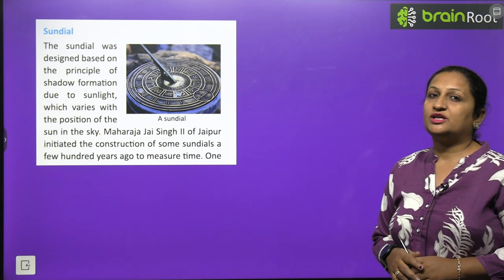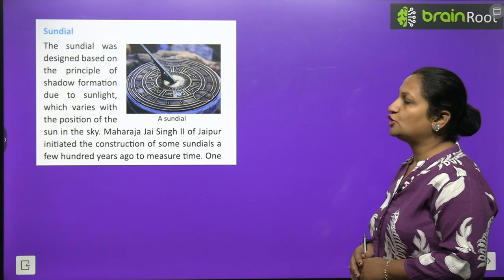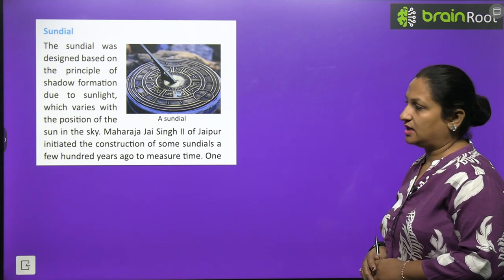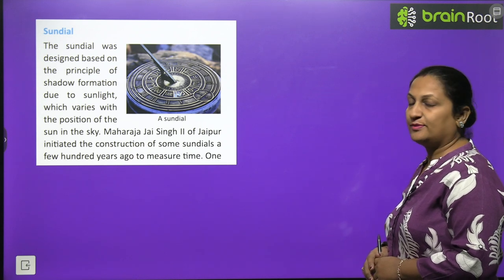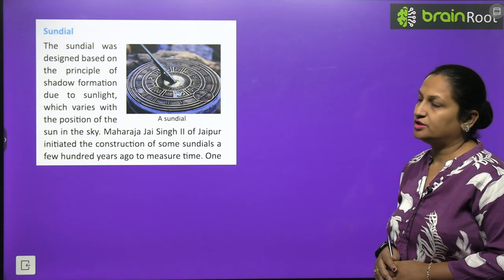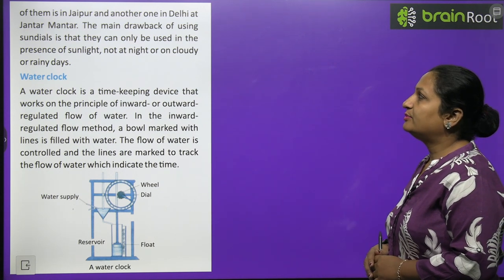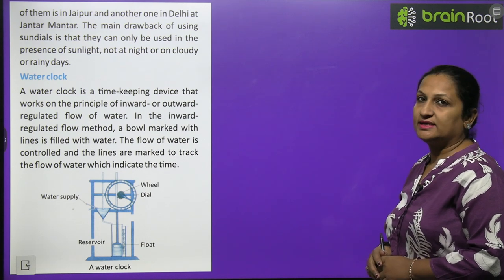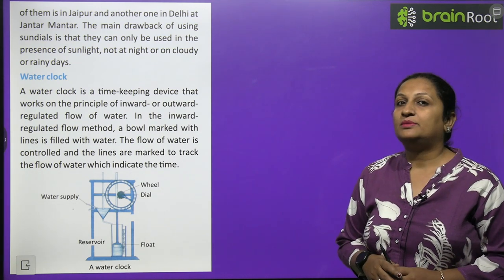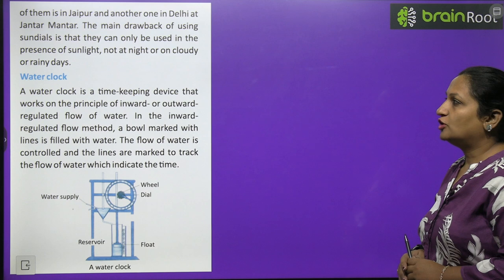Then there is the sundial. The sundial measures time on the basis of the shadow of the Sun. It was designed based on the principle of shadow formation due to sunlight, which varies with the position of the Sun in the sky. Maharaja Jai Singh II of Jaipur initiated the construction of some sundials a few hundred years ago to measure time — one is in Jaipur and another is in Delhi at Jantar Mantar.